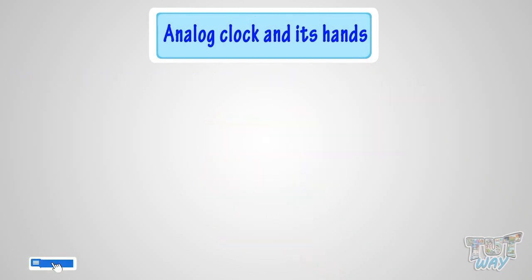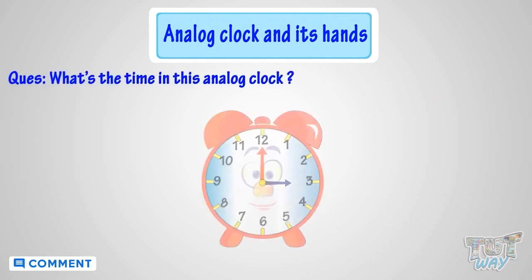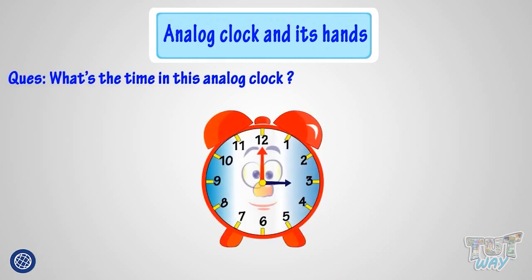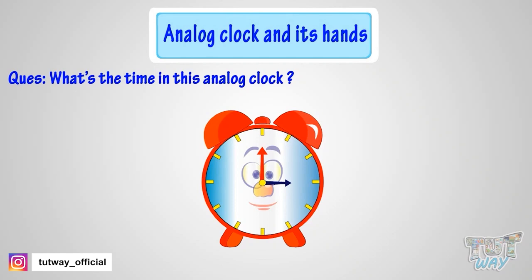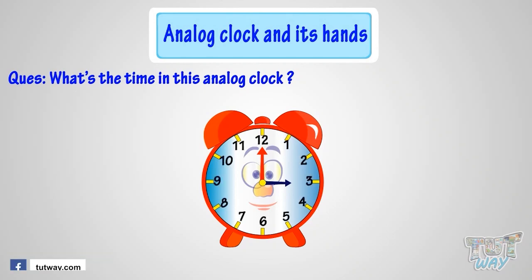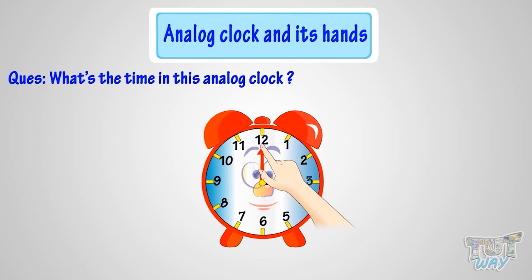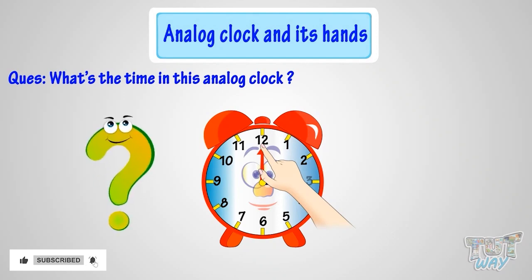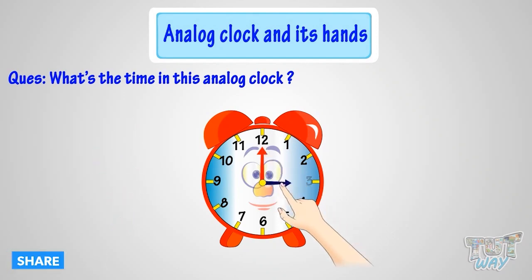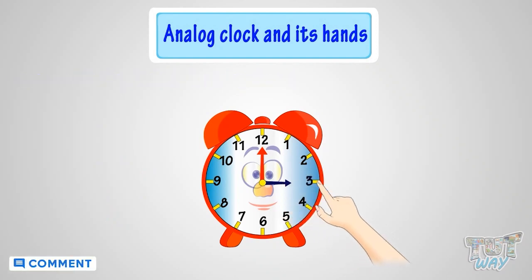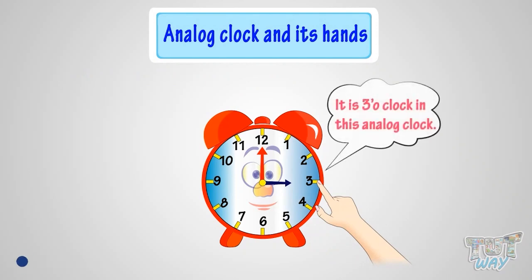Here we have another example. Can you tell me what's the time in this analog clock? Oops! No numbers written here. So, kids, you must be knowing the places of various numbers on the clock. This is the place of number 12, so the minute hand is pointing at number 12 — it's time to the hour. But to which hour? The hour hand tells the hour, and this place is of number 3, where the hour hand is pointing. So, it's 3 o'clock.